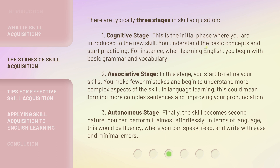Stage 3: the Autonomous Stage. Finally, the skill becomes second nature. You can perform it almost effortlessly. In terms of language, this would be fluency, where you can speak, read, and write with ease and minimal errors.